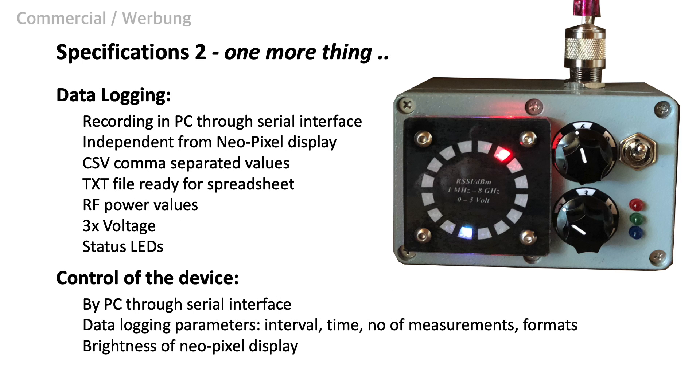All the measured and pre-processed data can be logged independently from the ring display through the serial interface and the logging function can be configured and controlled through the same serial interface. We just need a terminal program for this. I will explain in a later episode how to set up this. We can configure the time intervals, the number of measurements, the columns to be logged and a lot more. We can also choose different modes for the data formats like comma separated values for an endless mode or text that is ready to import for spreadsheets.